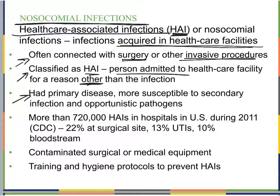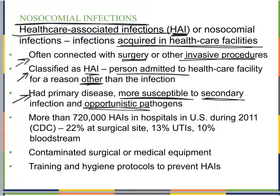Nosocomial infections also occur when someone with a primary disease becomes more susceptible to a secondary or opportunistic infection. For example, a person in the waiting room who is already fighting one pathogen has a weakened immune system, making them susceptible to an additional pathogen picked up in the facility. Opportunistic pathogens look for the opportunity when someone's immune system is overworked or compromised.